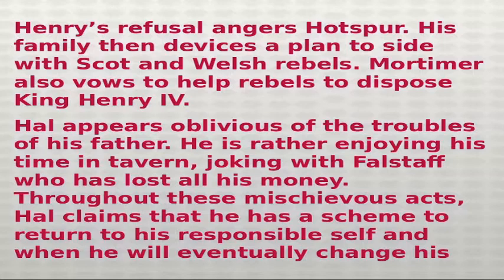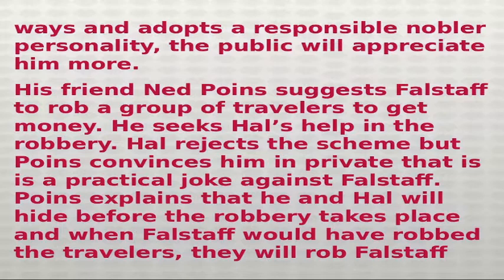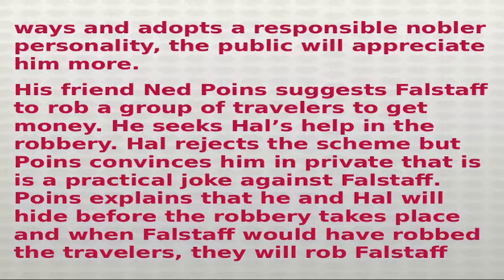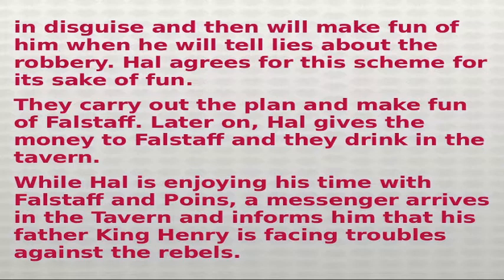Hal appears oblivious to his father's troubles. He is rather enjoying his time in the tavern, joking with Falstaff, who has lost all his money. Hal claims he has a scheme to return to his responsible self — when he eventually changes his ways and adopts a nobler personality, the public will appreciate him more. His friend Ned Poins suggests robbing a group of travelers. He and Hal plan to hide, let Falstaff rob the travelers, then rob Falstaff in disguise and later mock him when he tells lies about it. They carry out the plan, make fun of Falstaff, and then drink together in the tavern.